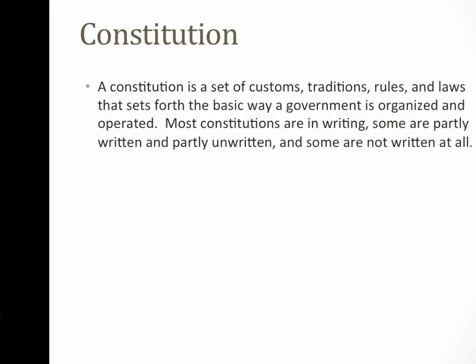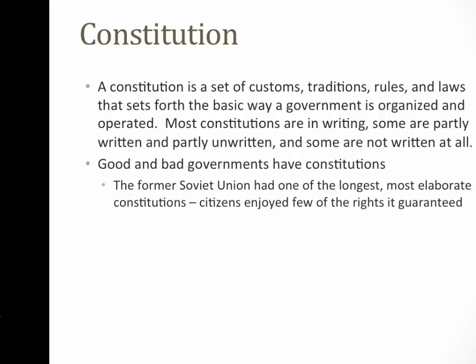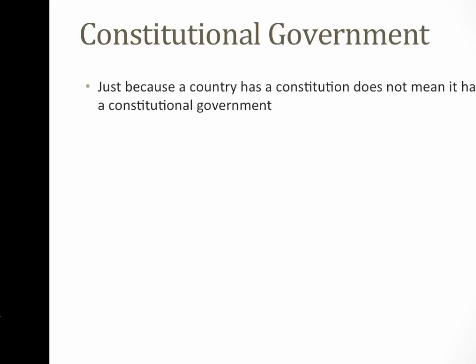A constitution is a set of customs, traditions, rules, and laws that set forth the basic way a government is organized and operated. Ours is in writing, but not all constitutions are. Great Britain's constitution is a combination of common laws and different documents — it isn't neatly written down the way ours is. This is important when we talk about a constitutional government versus a government that has a constitution. You can have good and bad governments that have constitutions. The former Soviet Union, which was communist and had a dictator, had one of the longest and most elaborate constitutions, but its citizens had very few guaranteed rights.